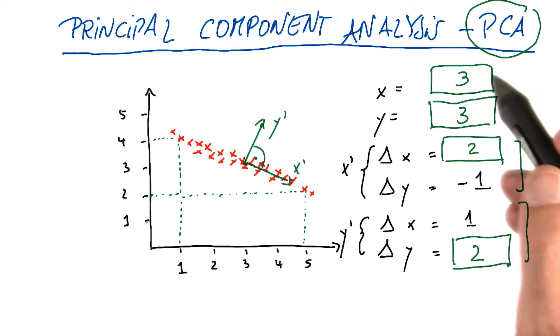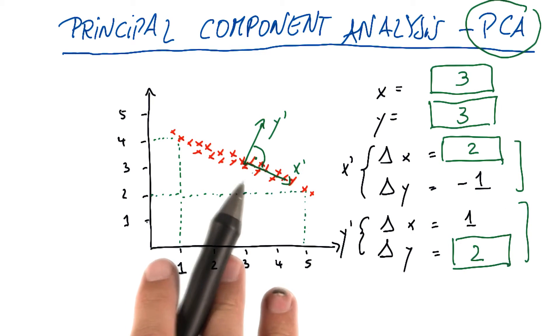What's important is that we found out where the center of the data is, and we found the principal axis of variation.